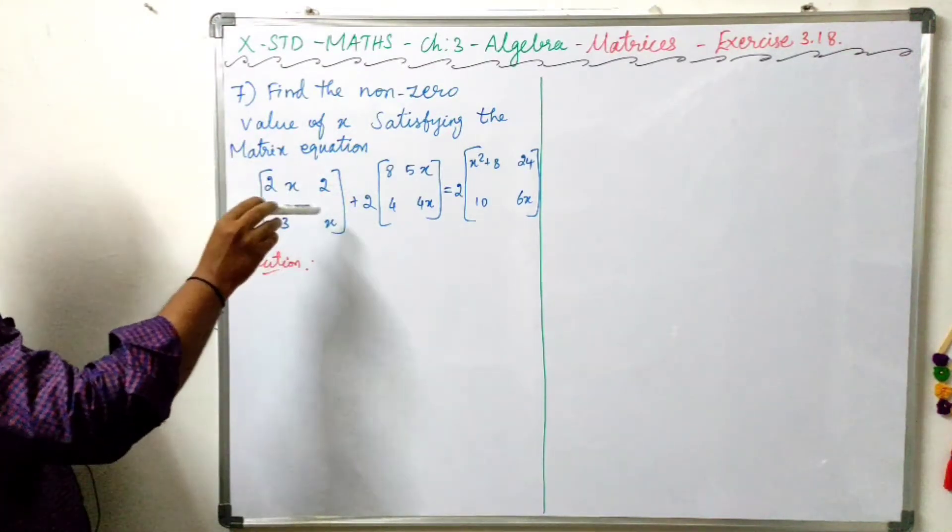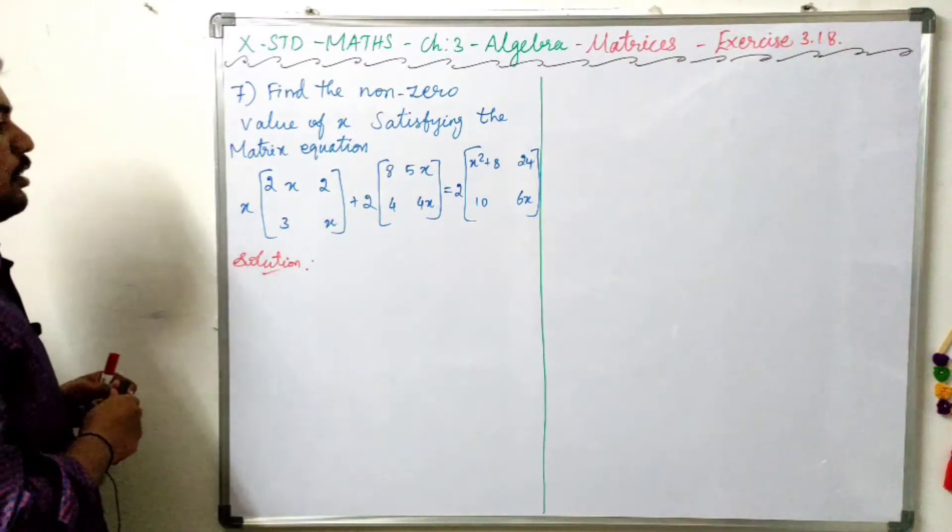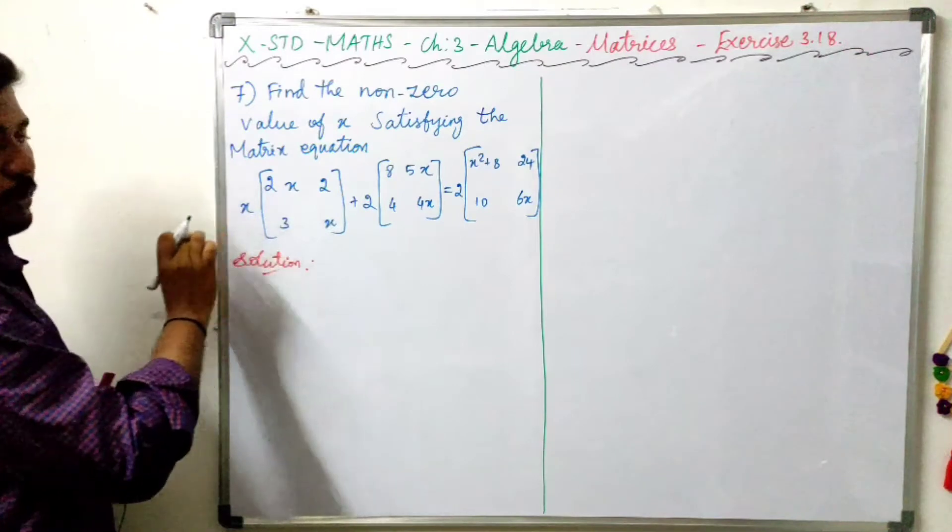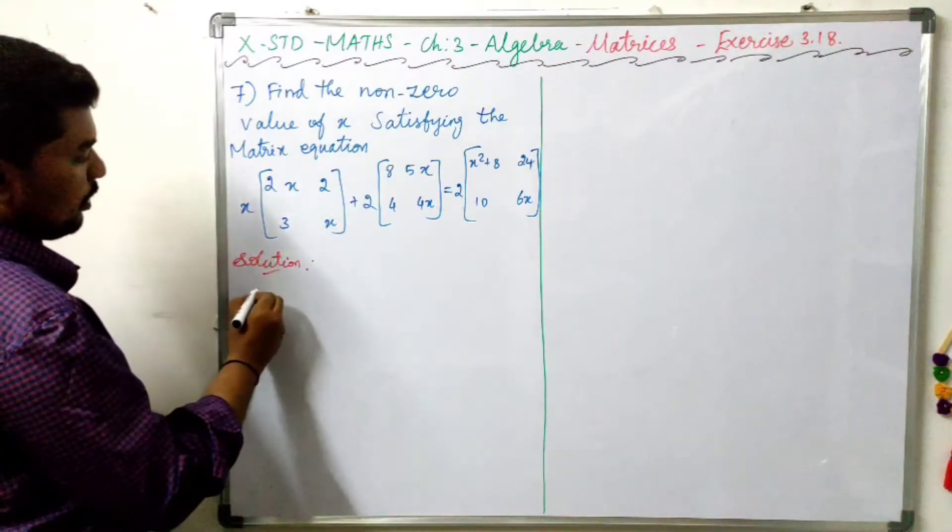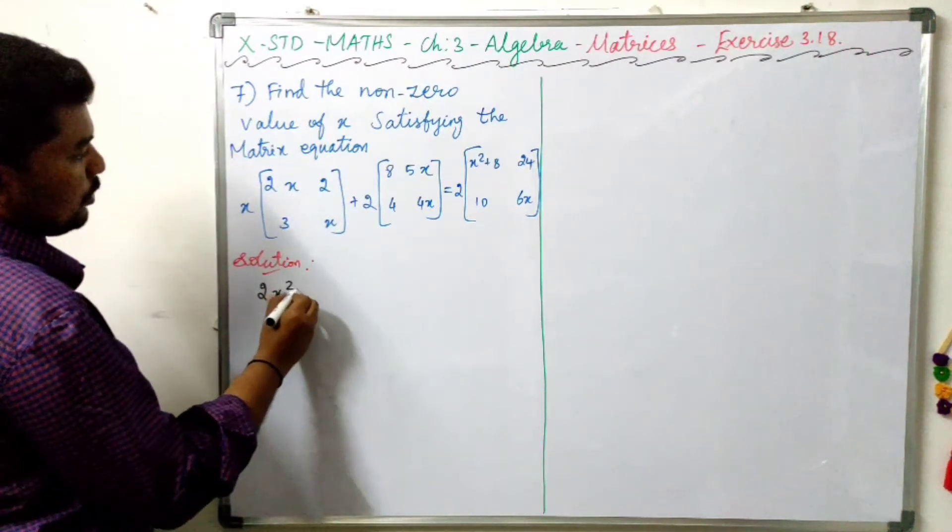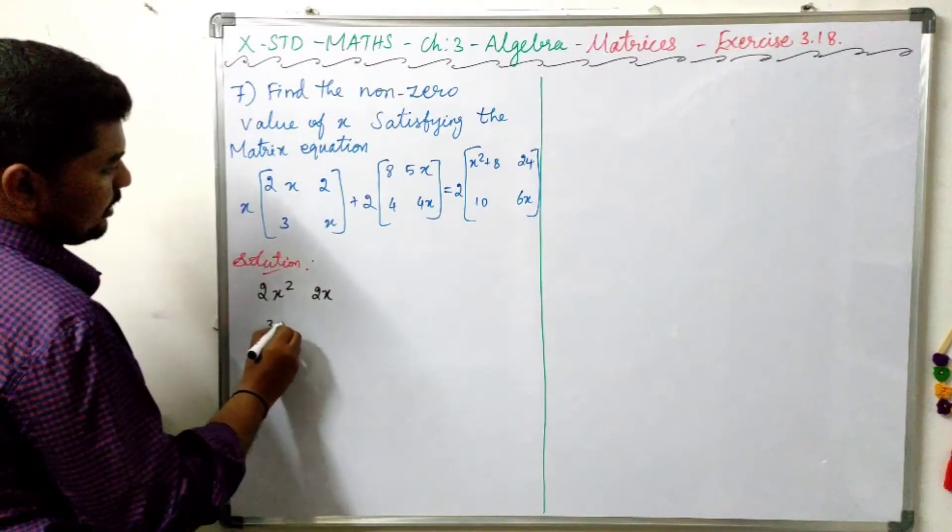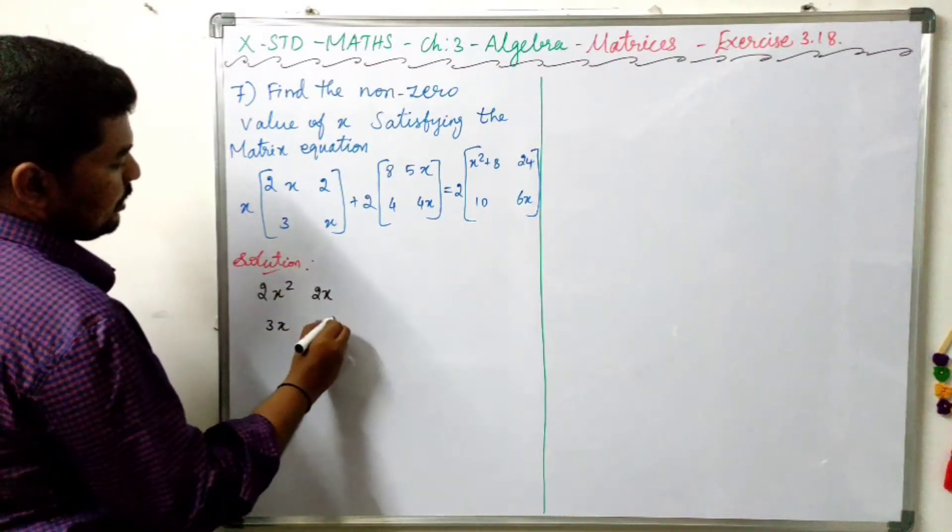First, we will simplify the equation. We will multiply the matrices. 2x times 2, 3x. We will multiply by x: 2x square, 2x, 3x times x equals x square.